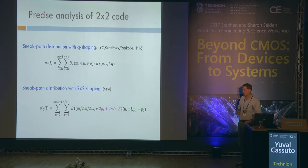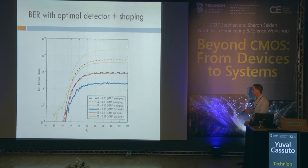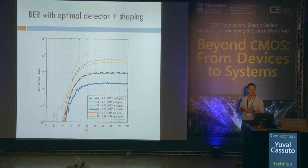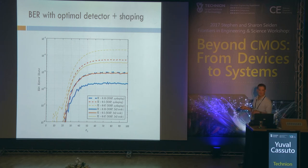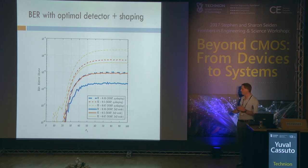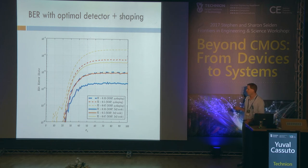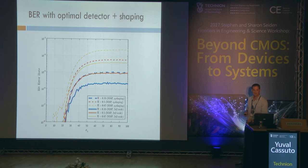Let's see the results. Each color represents a different storage rate, less than one — so we lose something in storage space when coding. But look at the difference between solid and dashed curves within each color: that's exactly the gain from coding. It's a fair comparison — both trivial Q-shaping and the coded two-by-two solution have the same storage rate, same cost, but we get a much better bit error rate with the new code.